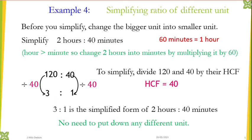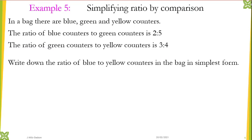Now lastly I'm going to show you simplifying across different ratios — where you're comparing different ratios and have to simplify across them. This is called simplifying ratio by comparison. In a bag there are blue, green, and yellow counters. The ratio of blue counters to green counters is 2 to 5, and the ratio of green counters to yellow counters is 3 to 4.